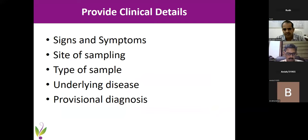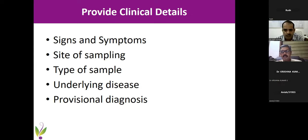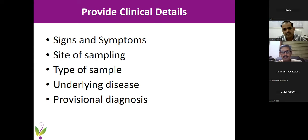We'll discuss at the end what happened to these cases and how pre-analytic details would have made a difference. The first and foremost request to all clinicians is to provide clinical details: signs, symptoms, site of sampling, type of sample, and underlying diseases. If you tell me the patient is diabetic, the whole picture changes. If you tell me he's a transplant patient, it becomes very tricky regarding what and how to report. Provide a provisional diagnosis — just don't send a sample without telling us what you have in mind so we can process it appropriately.